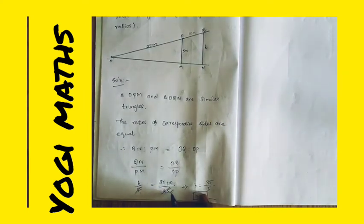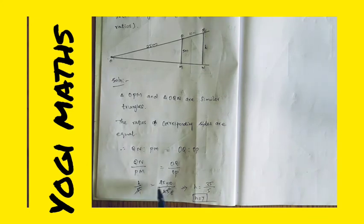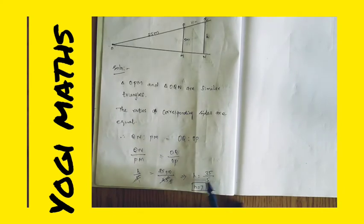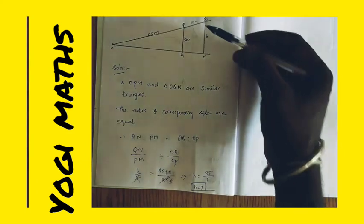One 5s are 5, 5 times 5 is 25. So x is equal to 25 plus 10 is 35 divided by 5. One 5s are 5, 7 times 5 is 35. Then x is equal to 7.